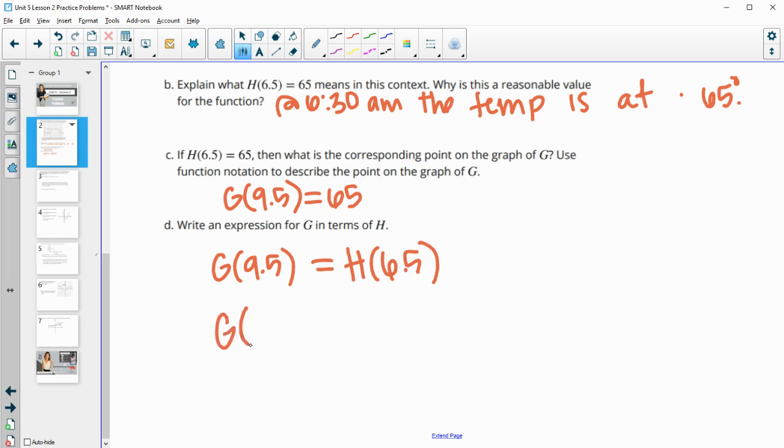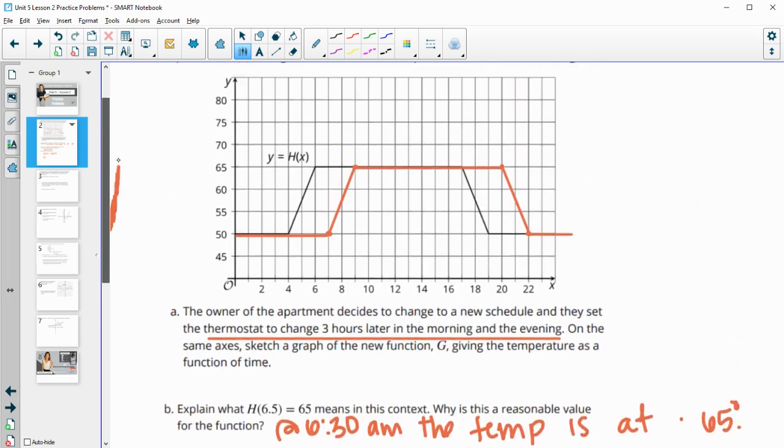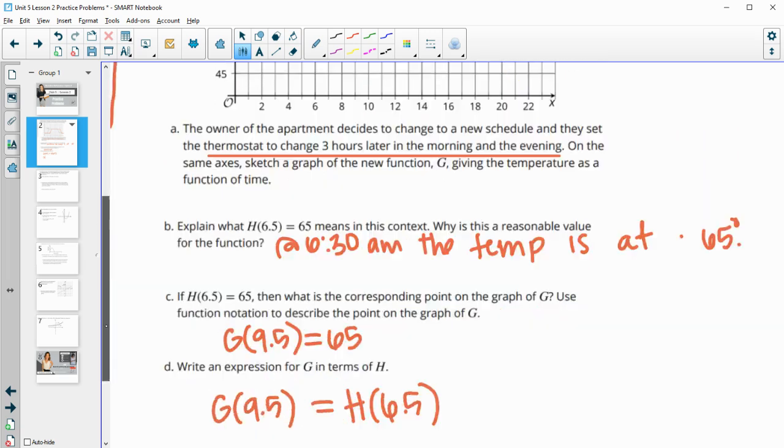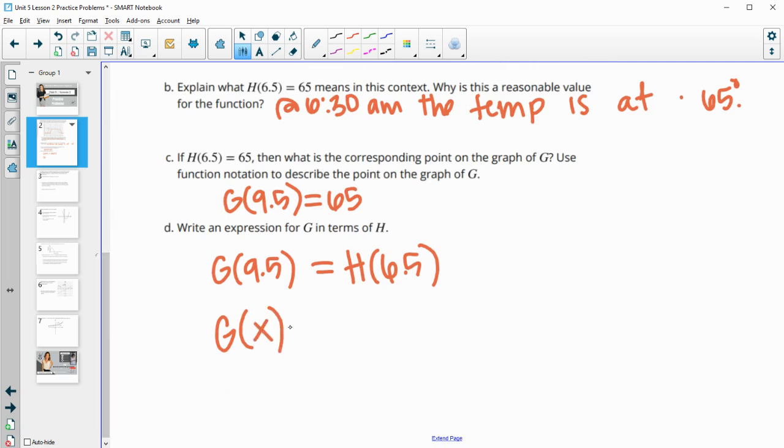So if we want to write G in terms of H. So what was the input variable they were doing here? So this was H of X. So then G of X. So now if X is this, H of X is three less than that. So H of X is going to be equal to X minus three. Those are the corresponding values. So G of X equals H of X minus three.